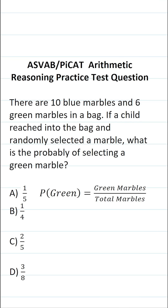This arithmetic reasoning practice test question for the ASVAB says: There are 10 blue marbles and 6 green marbles in a bag. If a child reached into the bag and randomly selected a marble, what is the probability of selecting a green marble?